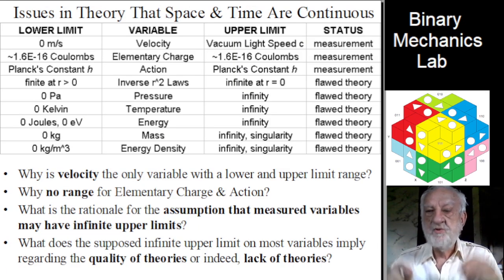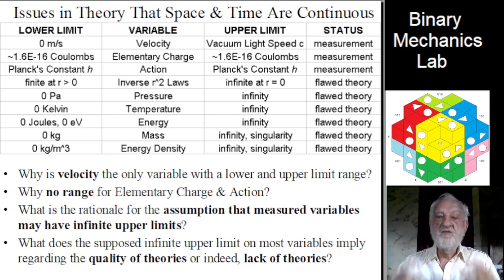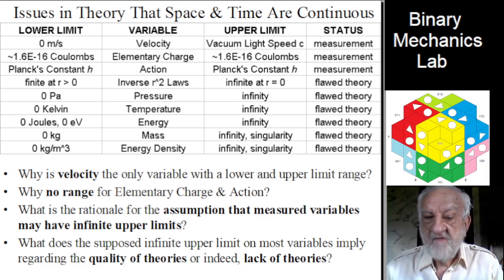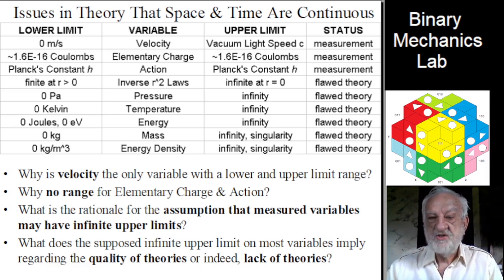Let's look at a simple table of issues in the theory that space and time are continuous. For the velocity variable, we have both a lower and upper limit in measured vacuum light speed c. Two more secondary constants are listed, the elementary charge and Planck's action constant h.